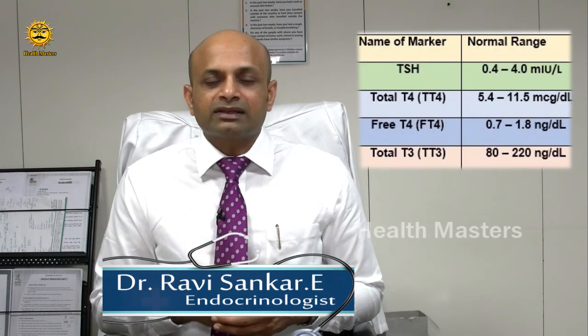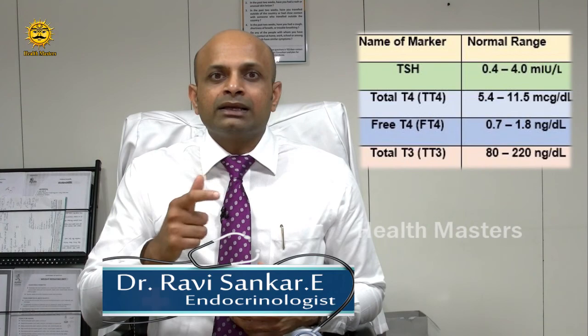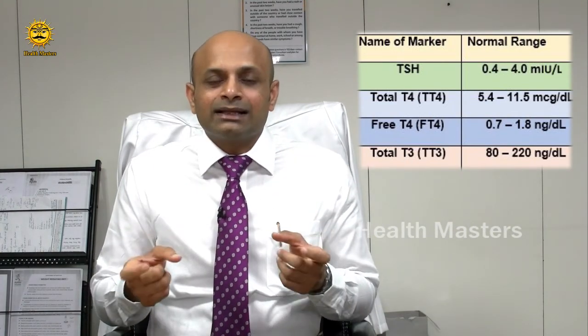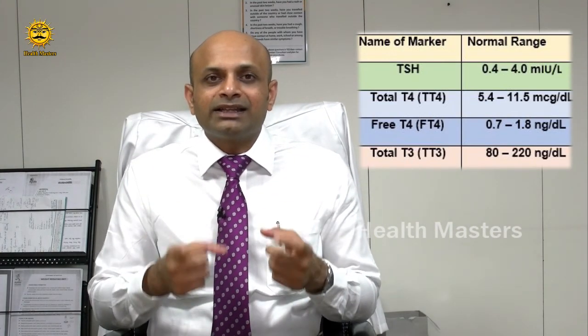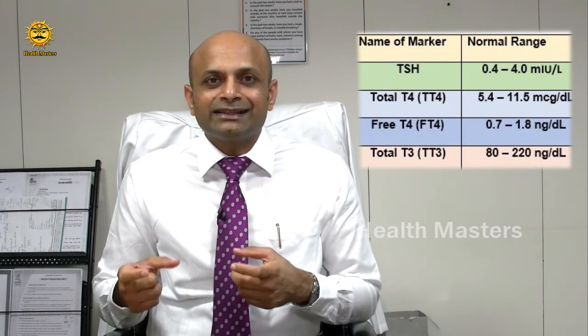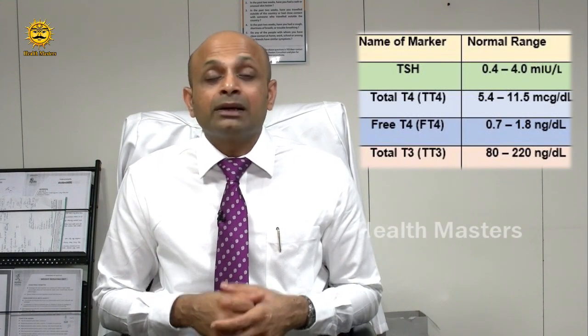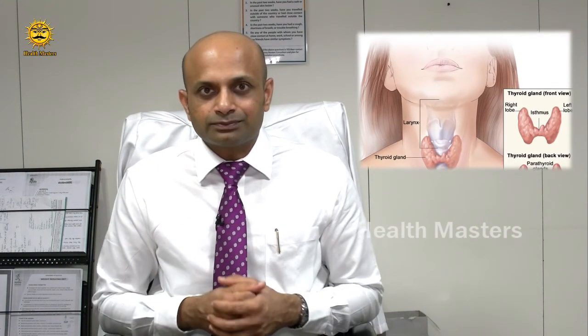Similarly, if the TSH levels are high in the blood, it suggests that T4 and T3 — that means thyroid hormone levels in the blood — might be low.